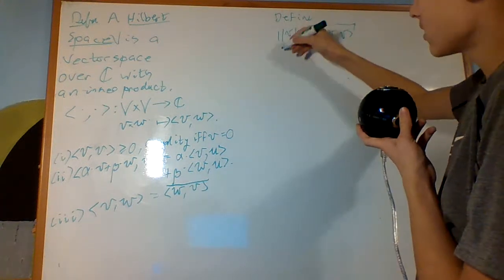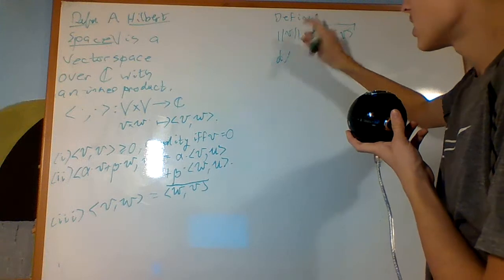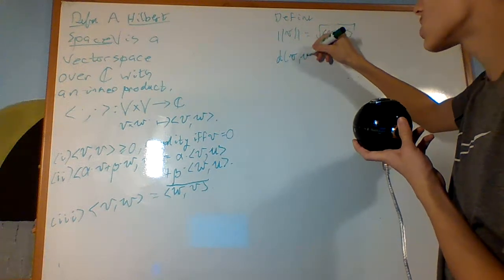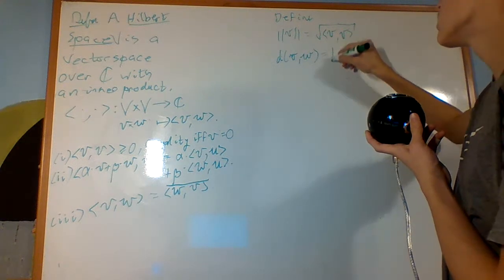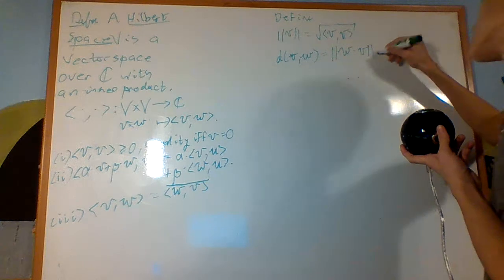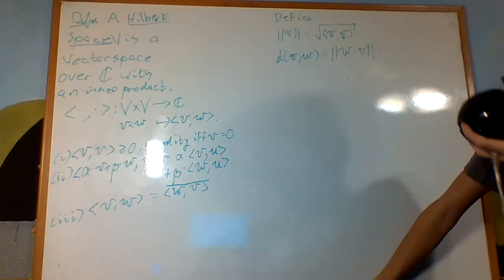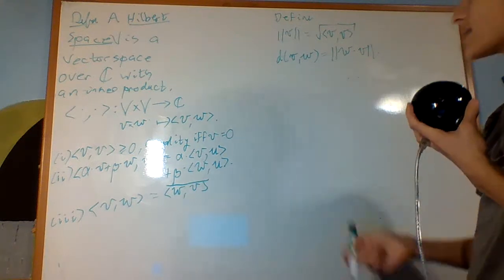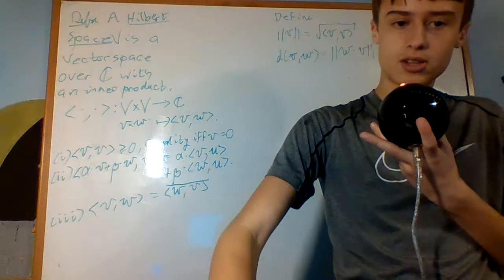And then we define the distance between V and W to be the norm of W minus V, because this is a vector space. Now there's one more condition, very strange condition.